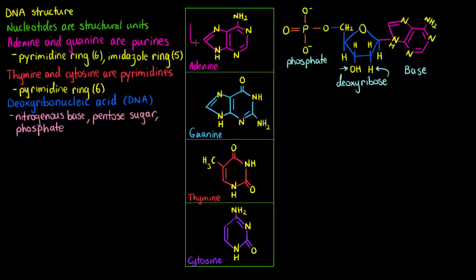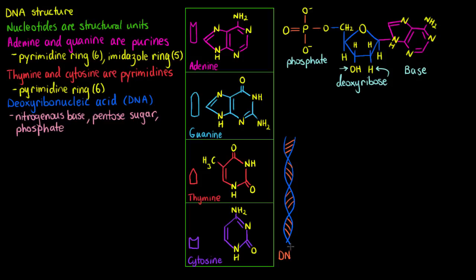That structure is far too complex, so for the majority of the rest of this video let's give them all a simple shape. We'll give adenine and guanine these shapes, and thymine and cytosine a complementary shape, because we refer to these bases as complementary bases. And here is a strand of DNA in the structure we all know — the DNA double helix.